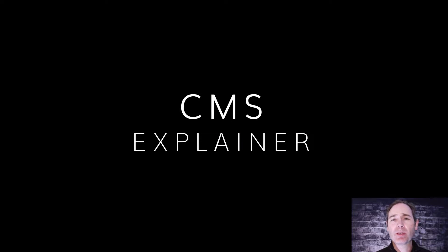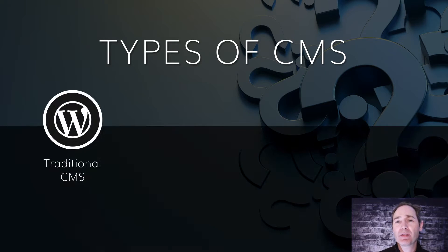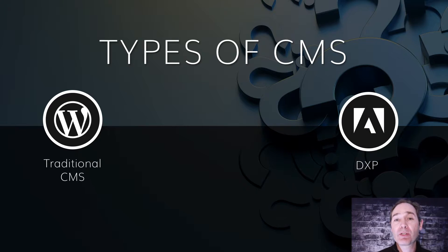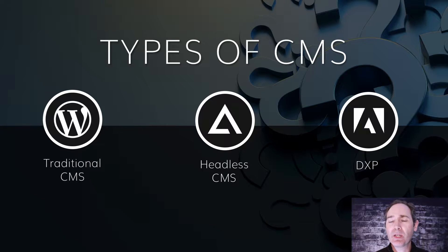There's a lot of confusion and misinformation about the types of CMS out there today. To help you make a decision about what CMS is right for you, we've made this handy explainer video. Now there are really three main categories of CMS: traditional CMS, of which WordPress is by far the most popular; DXP, or Digital Experience Platforms, where Adobe Experience Manager (AEM) is one example; and then there's Headless CMS, which includes Agility CMS. Let's dig into what each one is.